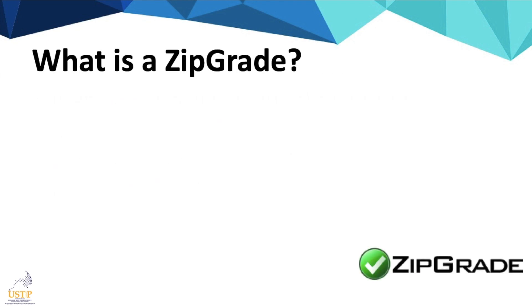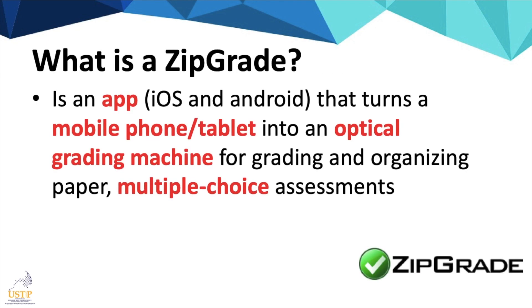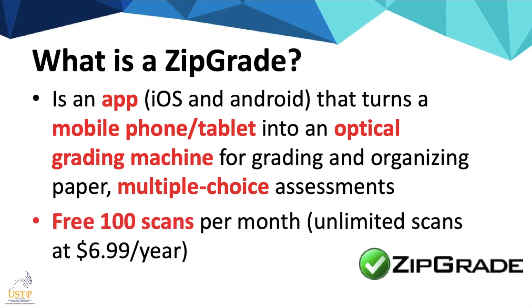ZipGrade is a mobile application compatible with both iOS and Android users. This application can be used to convert your mobile phones or tablets into an optical grading machine to check dichotomous assessment instruments. This app also comes with a free trial which can be used to check 100 papers per month. For those who want to use the app for bulk checking, you can subscribe for $7 a year.